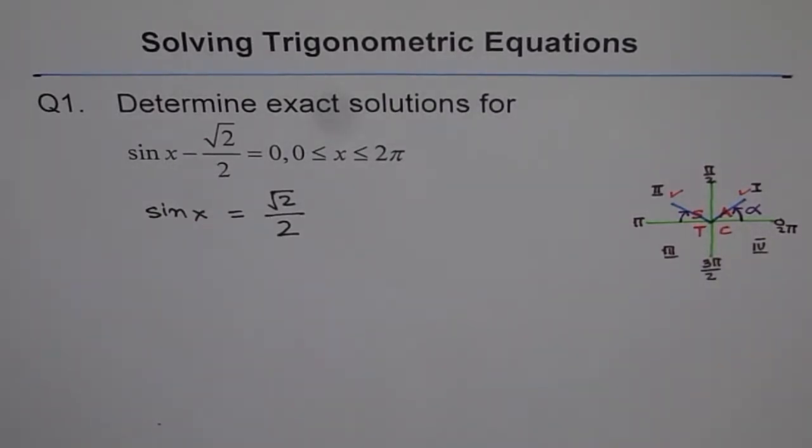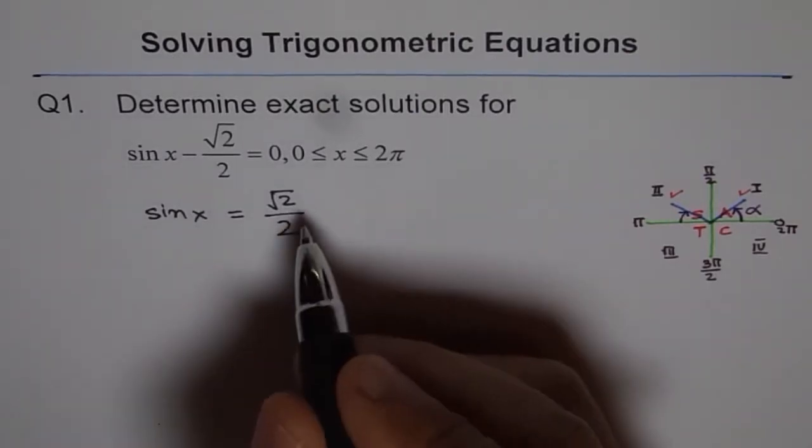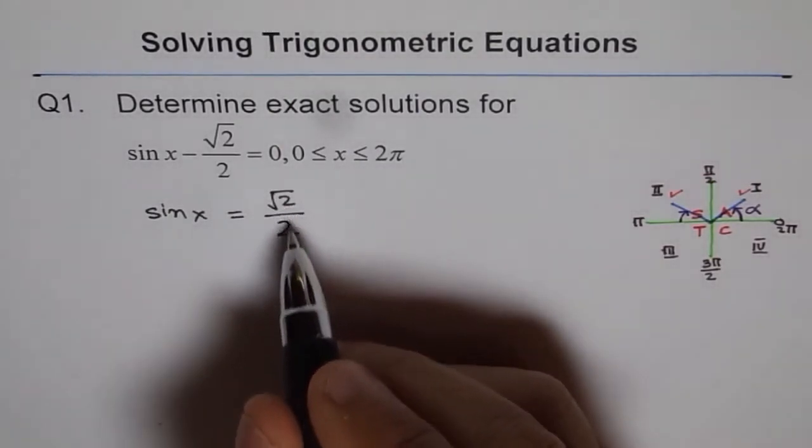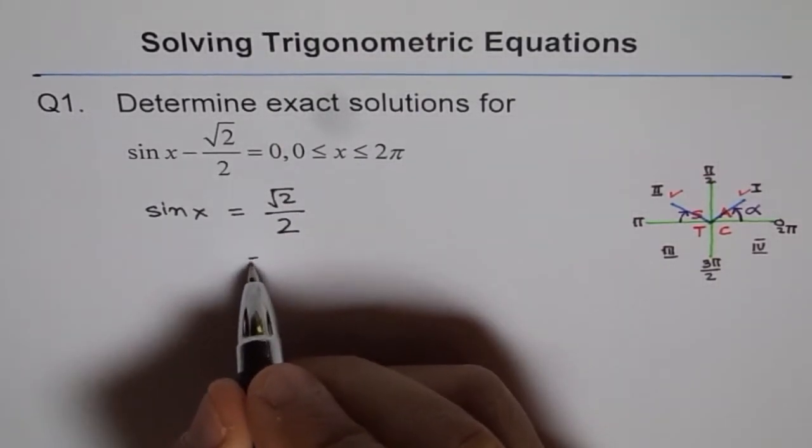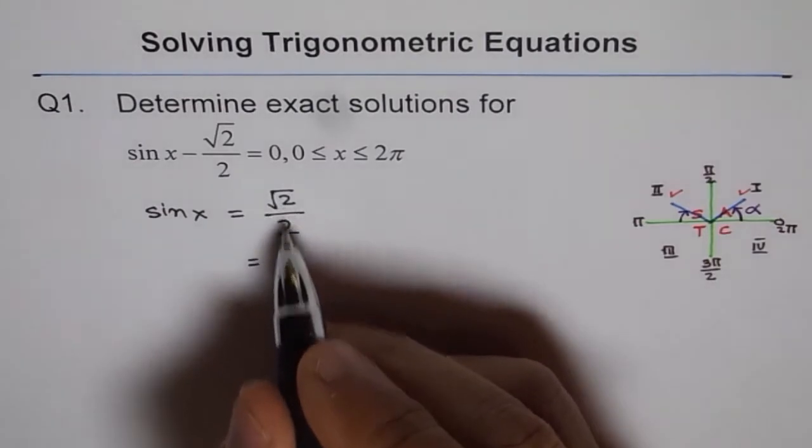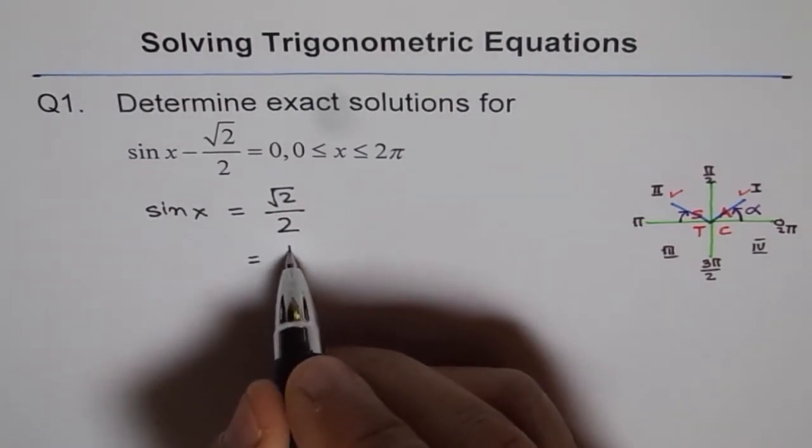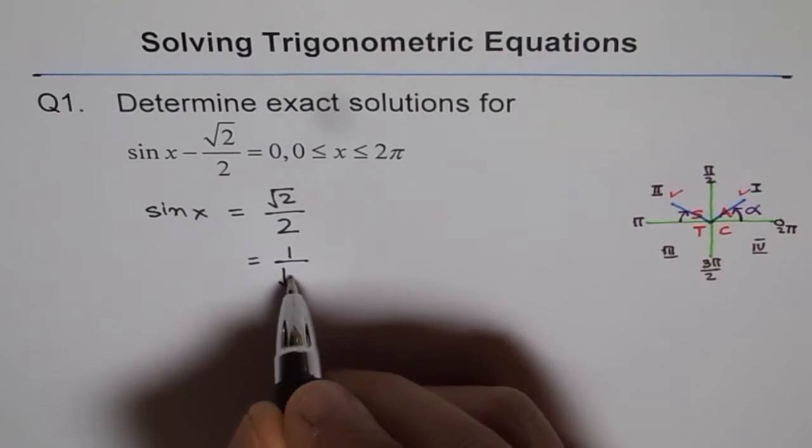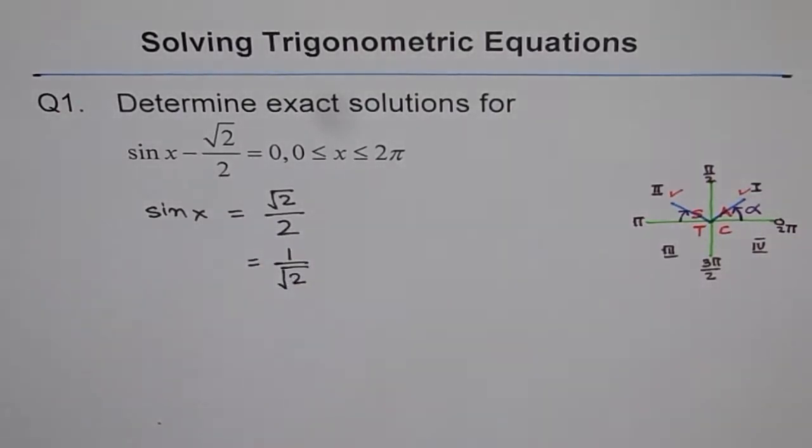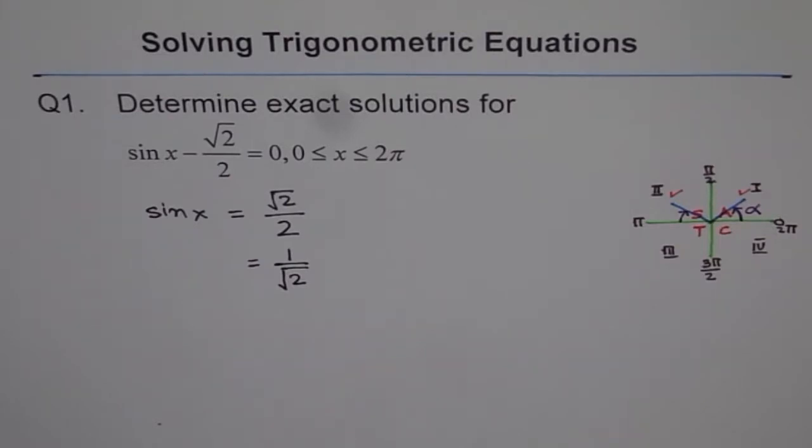Now, we have sin x equals to square root 2 over 2. This is the right way of writing this kind of a rational thing. Because we normally do not write square root 2 in the denominator. But this can be simplified and seen as 1 over square root 2. I am doing it on purpose. Since most of my students are more familiar with the triangle which has square root 2 in the denominator. So, let us make our special triangle which we are talking about.